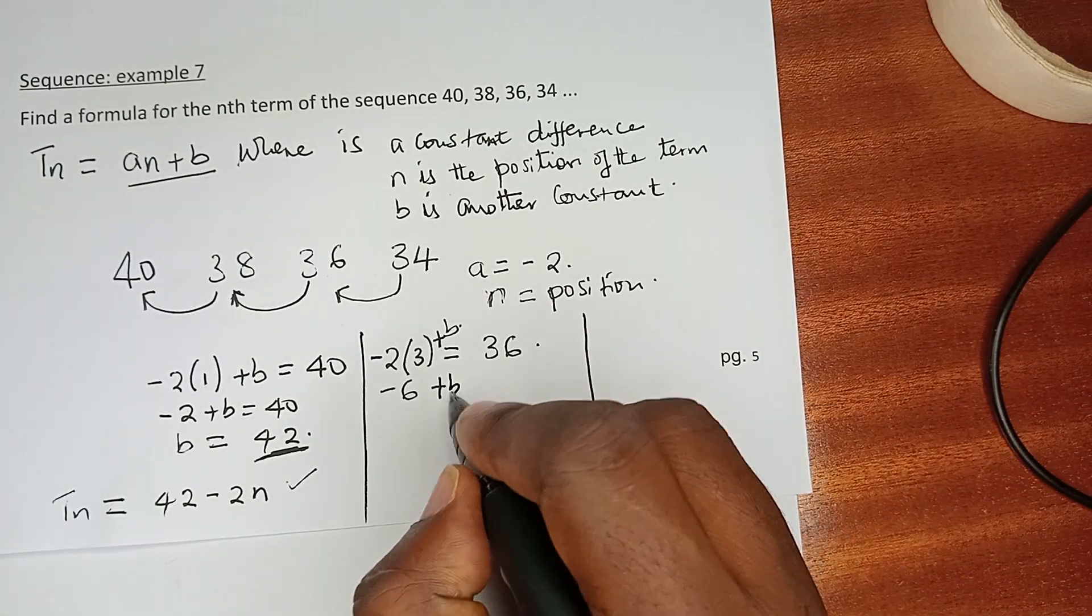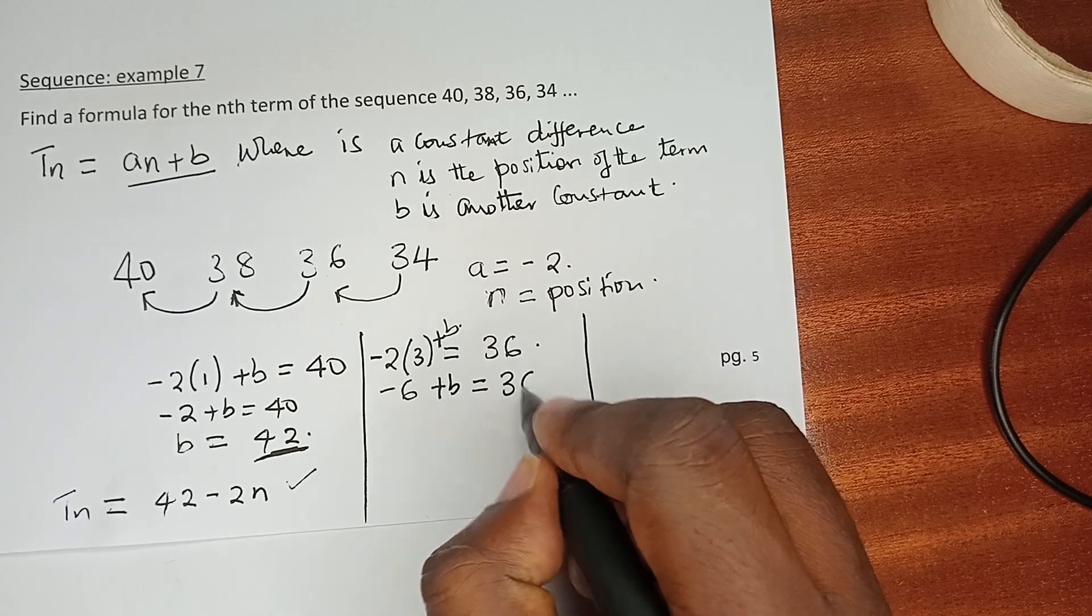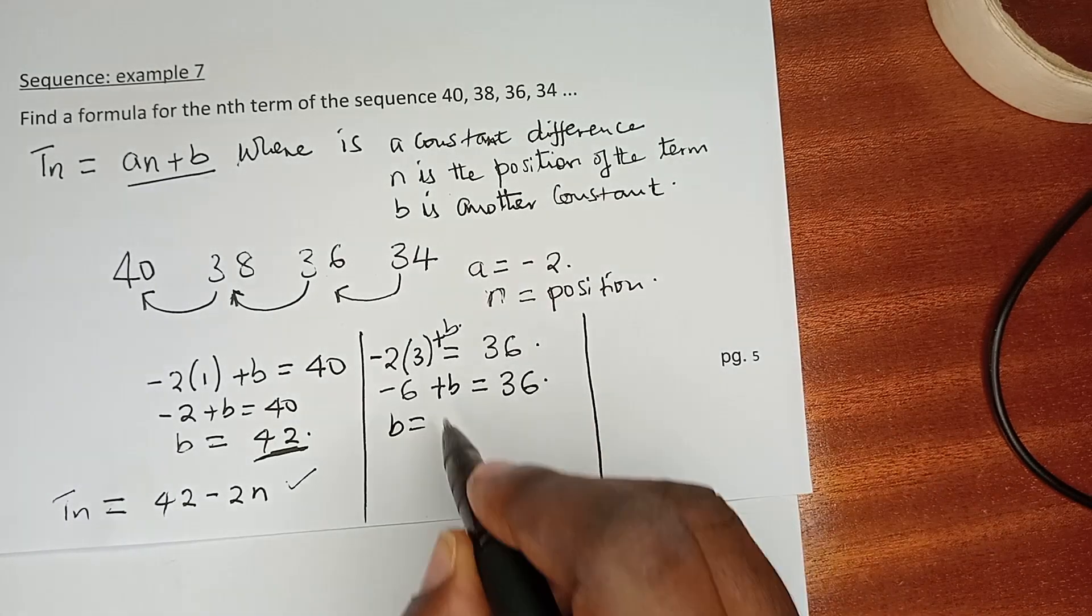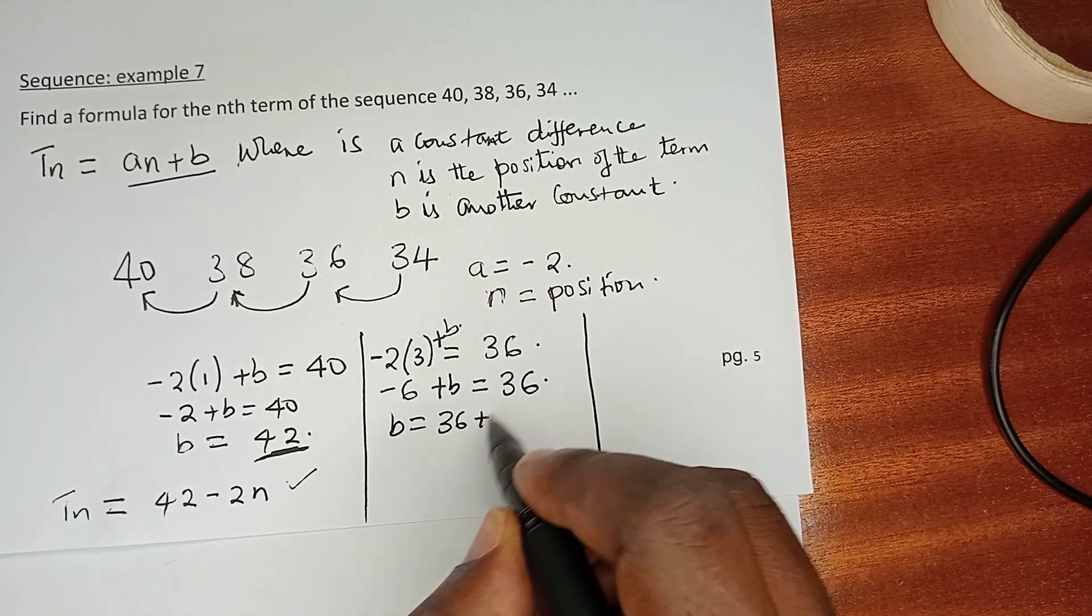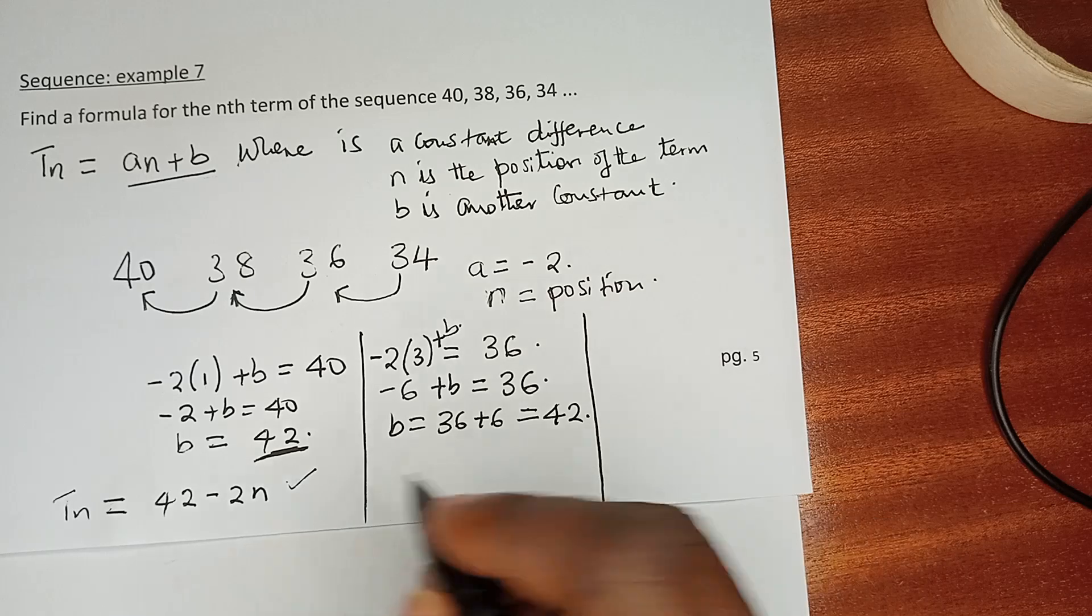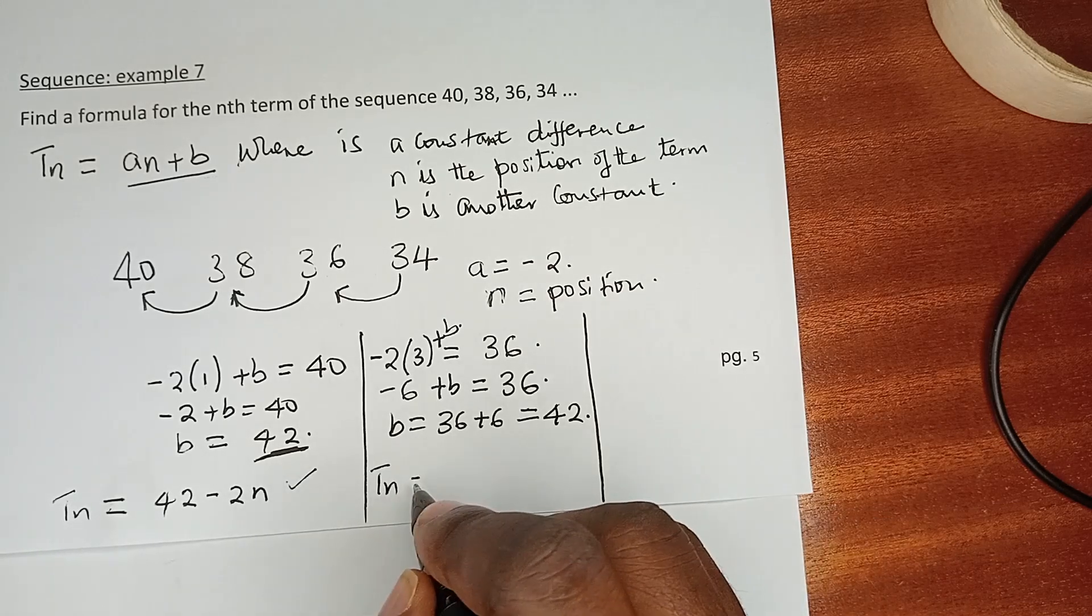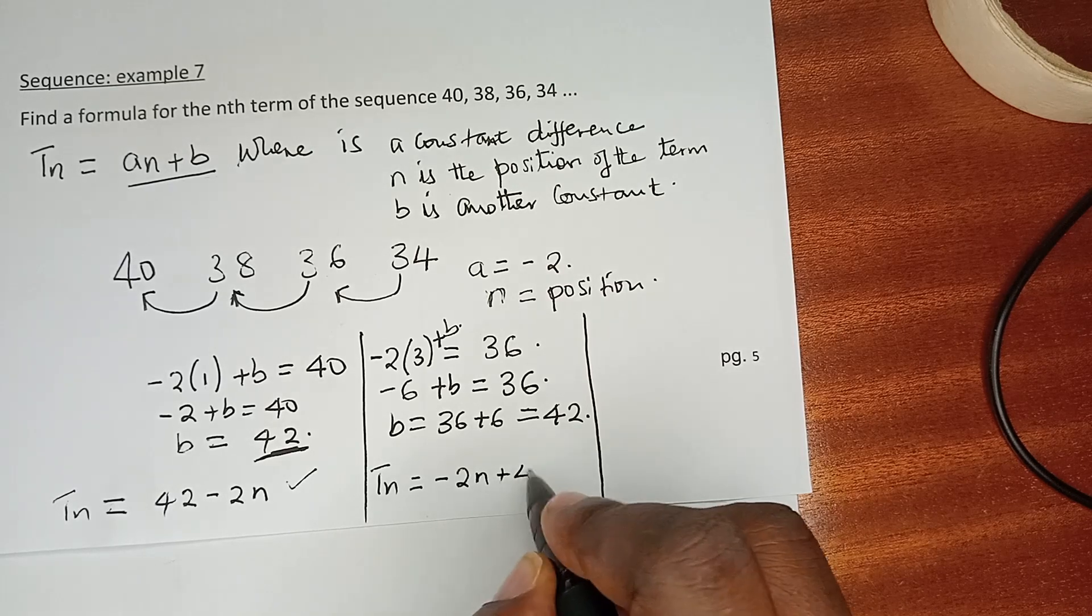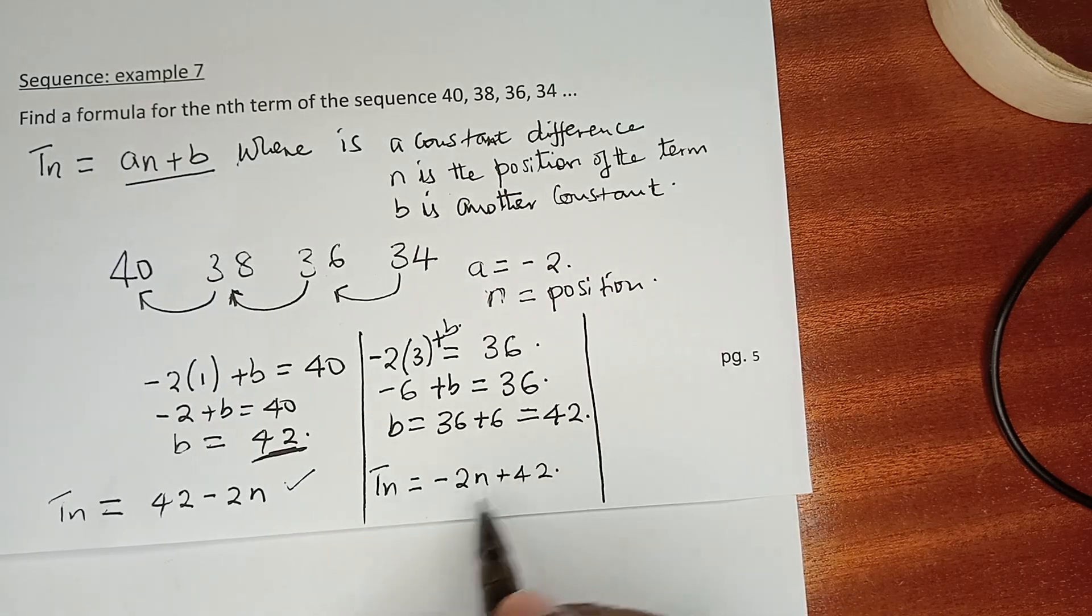-6 + b is equals to 36, and as you can see, b is equals to 36 + 6, which is 42. And generally the term n can be given with -2n + 42, and because it's